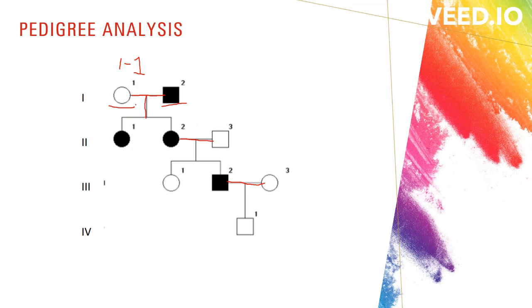For instance, the females 2-1 and 2-2 are daughters of 1-1 and 1-2. So let me explain the overall of this pedigree analysis.